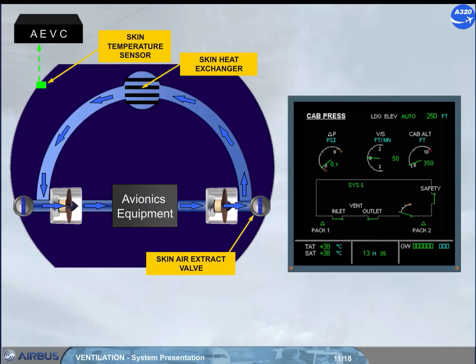On ground with thrust at takeoff, or in flight, if the skin temperature is high, a small flap opens in the closed extract valve. This is the intermediate configuration.